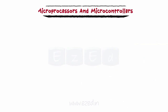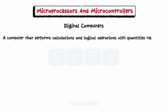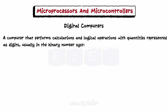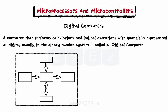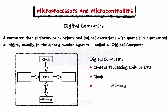Before starting with microprocessors and controllers, we will first see what digital computers are. A computer that performs calculations and logical operations with quantities represented as digits, usually in the binary number system, is called a digital computer. Different blocks of a digital computer are the central processing unit or CPU, clock, memory, and input-output devices.